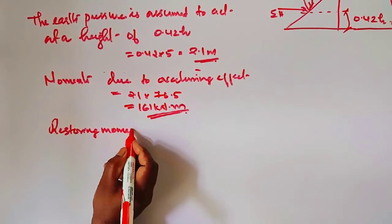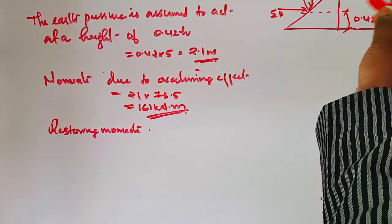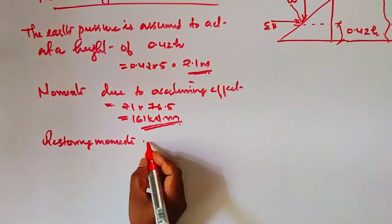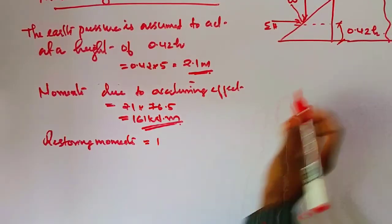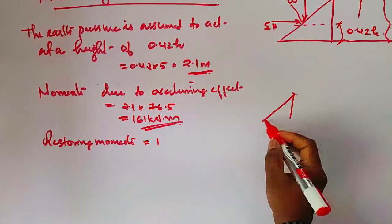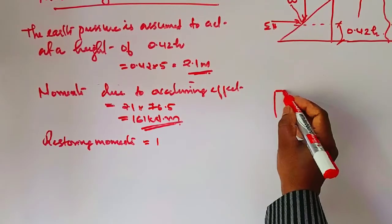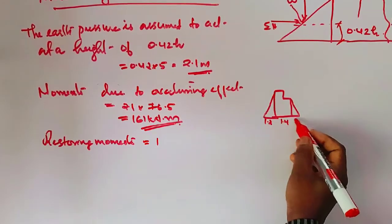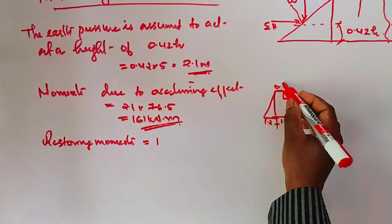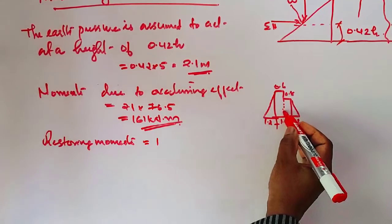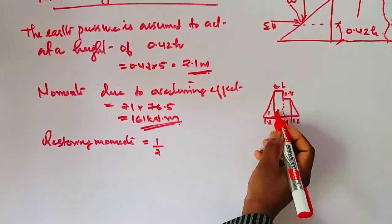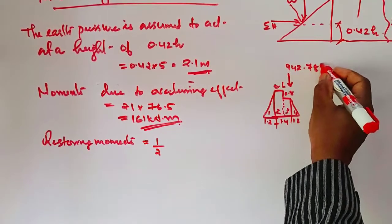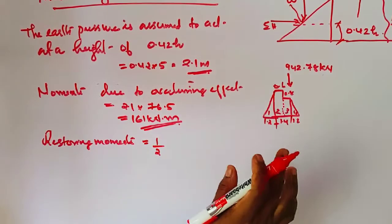Now calculating the restoring moment. Drawing another figure of the abutment: the abutment dimensions given in the question are 1.2, 1.4, and 1.2 meters, with 0.6 and 0.8 meters. We divide the abutment cross-section into four parts. The total vertical load has been calculated as 942.78 kilonewtons.